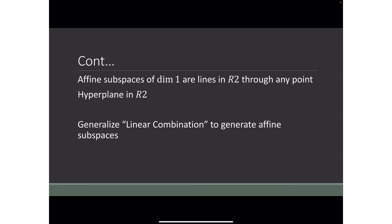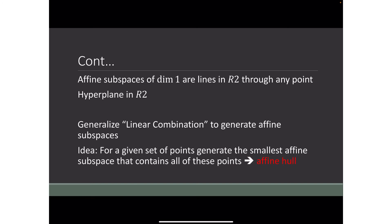Now, to come up with a generalization using linear combinations to generate affine subspaces: for a given set of points, we want to generate the smallest affine subspace that contains all of those points. We call that the affine hull, and the affine hull will be discussed in a bit.